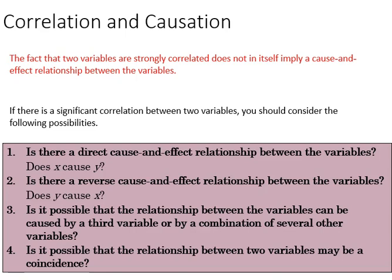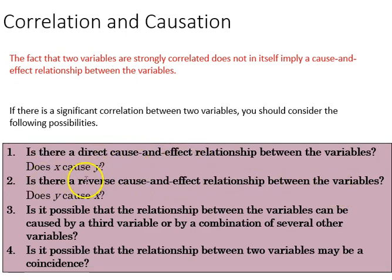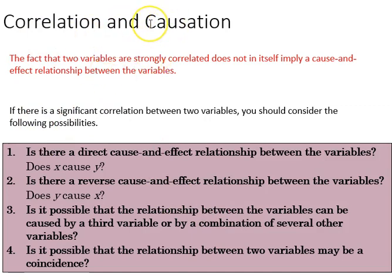One final thought as we close our discussion of correlations: correlation does not necessarily imply causation. Two things can be related without being causally linked. Reasons include a reverse cause-and-effect relationship, an indirect cause-and-effect relationship, third variables that may explain both variables (spuriousness), or the relationship may simply be coincidental. We need to carefully consider the order of time — does the cause come before the effect — the possibility of spuriousness, and the possibility of coincidence and chance.